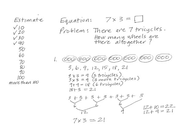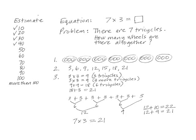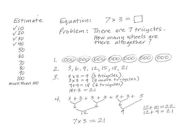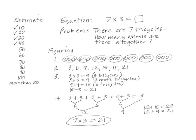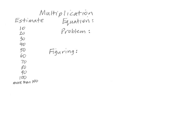I numbered and reviewed the methods: first, we drew circles to represent the wheels on seven tricycles; second, we skip-counted and got the same answer; third, Ruthie had the idea of breaking the problem into parts and we got twenty-one again; fourth, we added seven threes. I circled the equation — every way produced the same answer of twenty-one. I summarized: there are four parts to what we did — we read the problem, we made estimates, then wrote an equation, and then did the figuring. I erased the work specific to the tricycle problem and left the labels for the four parts as a model.